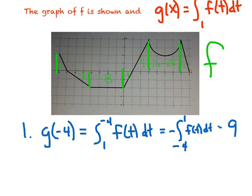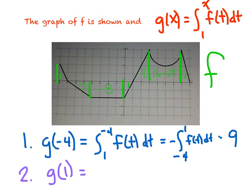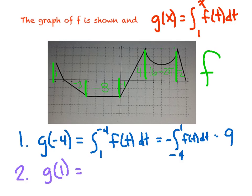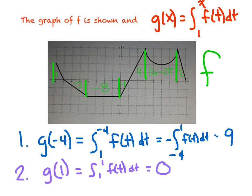Number 2: g of 1. I'm replacing x with 1, so g of 1 is the integral from 1 to 1 of f of t dt. How much area have you accumulated if your bounds don't change — if they're the same number? Have you moved at all? No, so that's an area of 0.